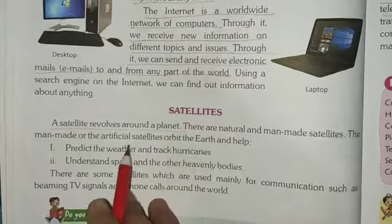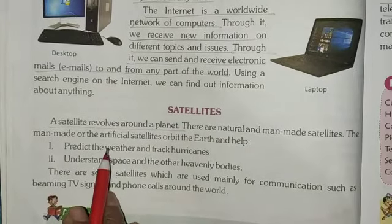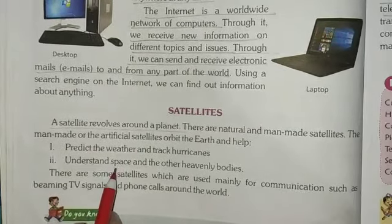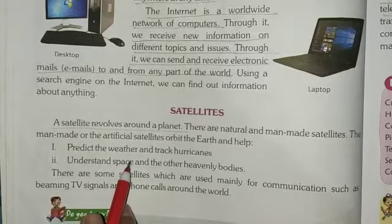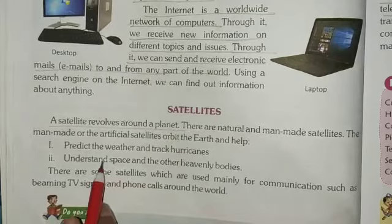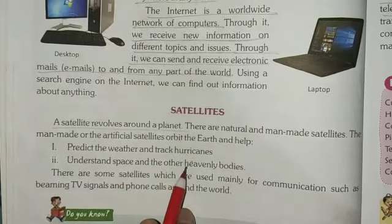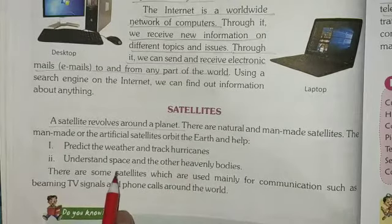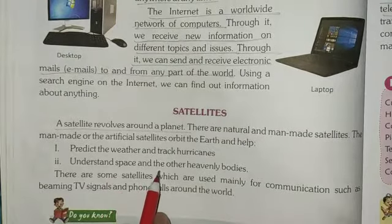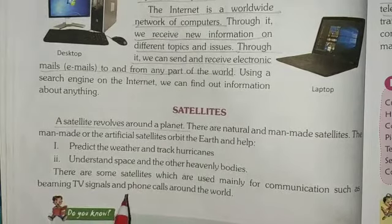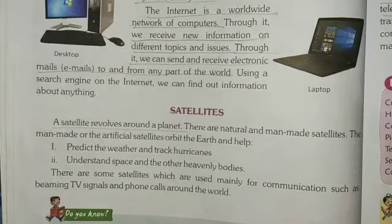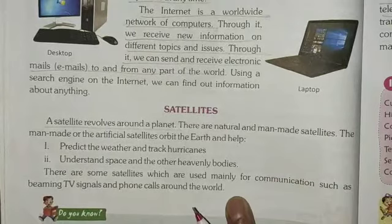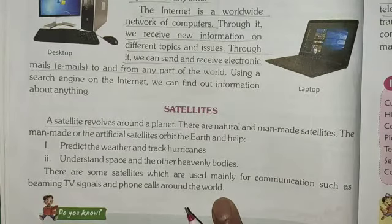Our next topic is satellites. A satellite revolves around a planet. There are natural and man-made satellites. Artificial satellites orbit the earth and help predict the weather and track hurricanes. Some satellites are used mainly for communication, such as beaming TV signals and phone calls around the world.